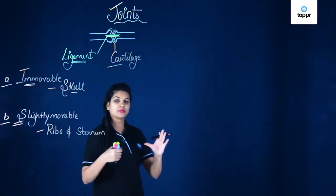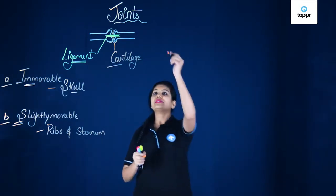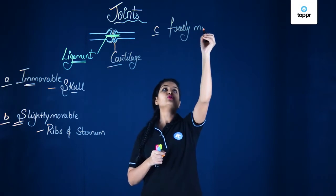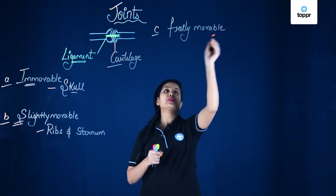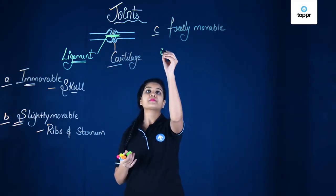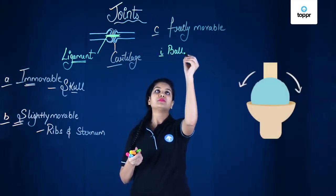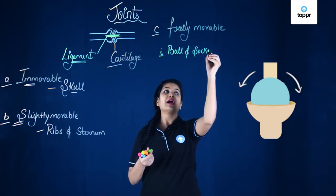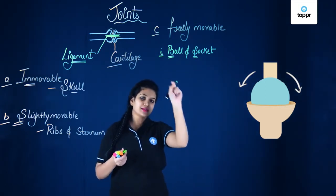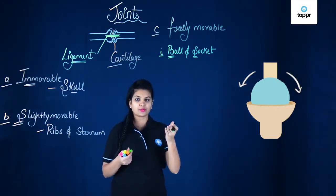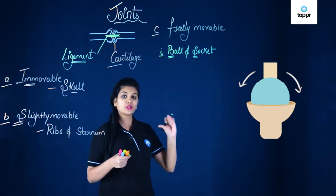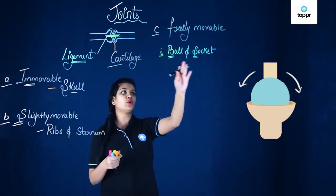The third type is the freely movable joint. Under freely movable joints there can be different types. The first type is the ball and socket joint. Here, at the end of one bone there is a ball-like structure — it is curved and rounded — and with the second bone there is a socket present. The ball at the end of one bone gets fitted into the socket of the other, forming the ball and socket joint.